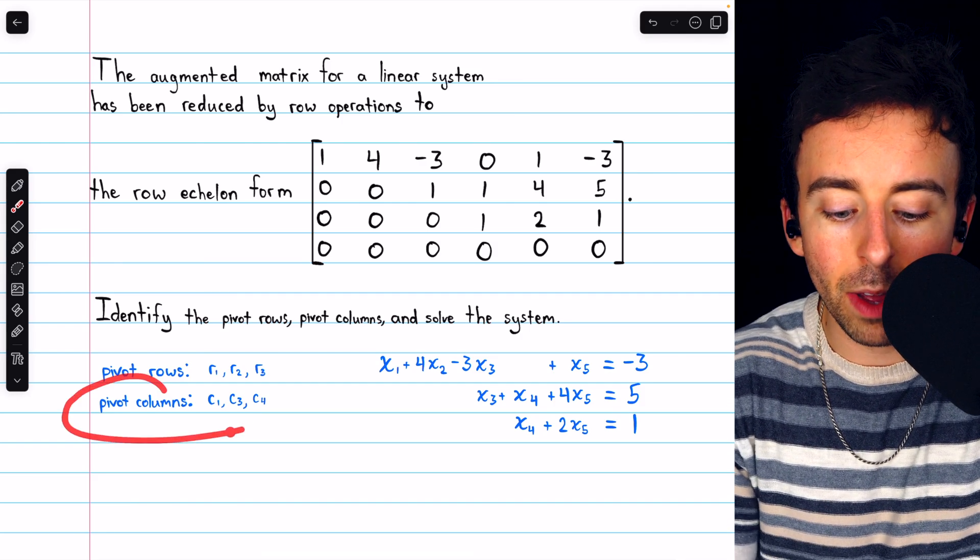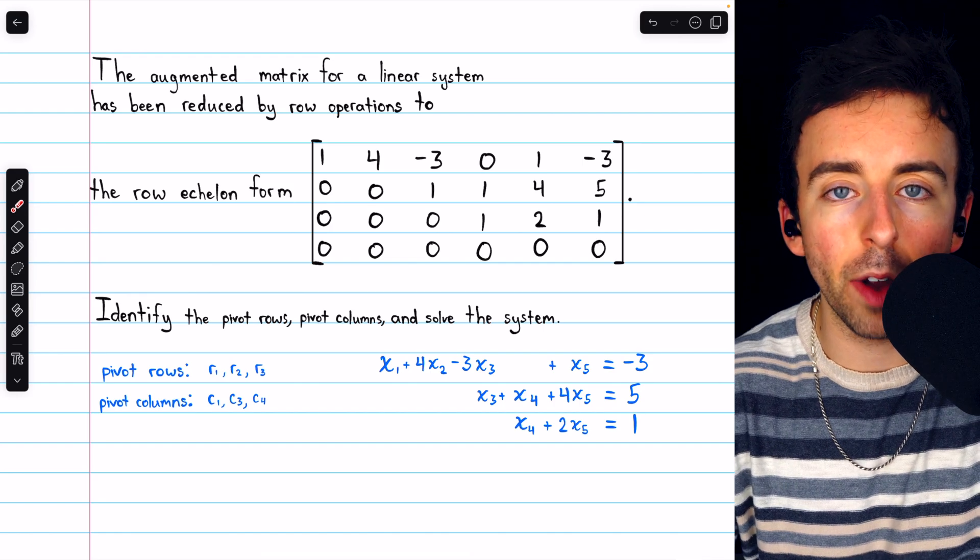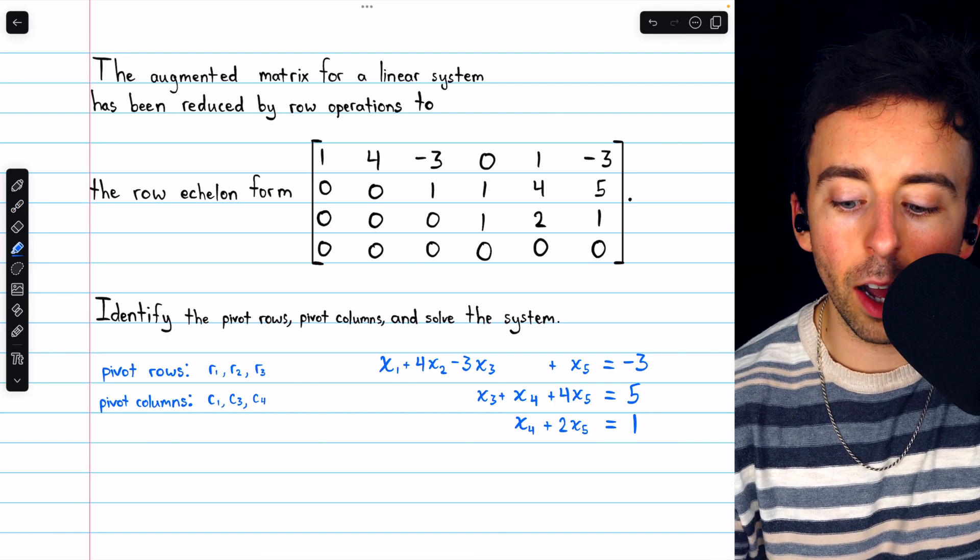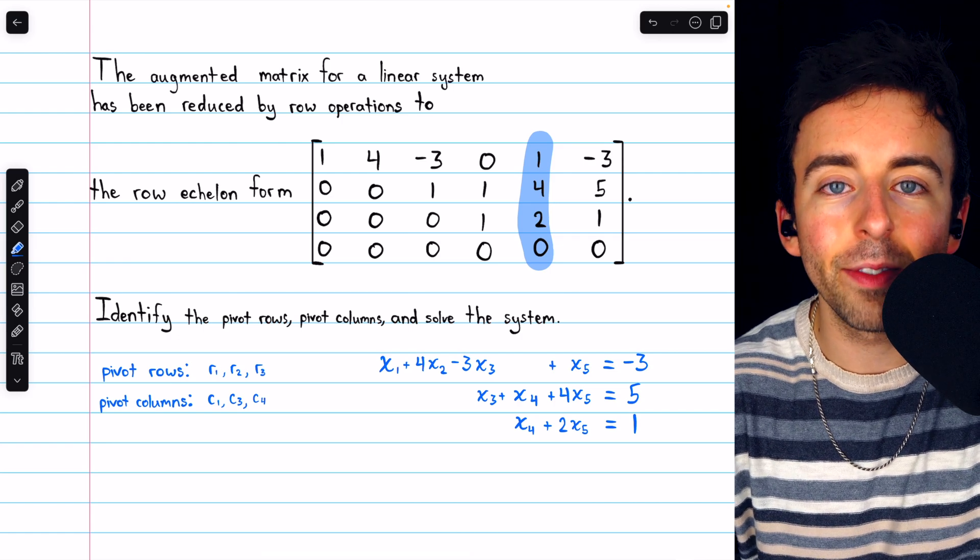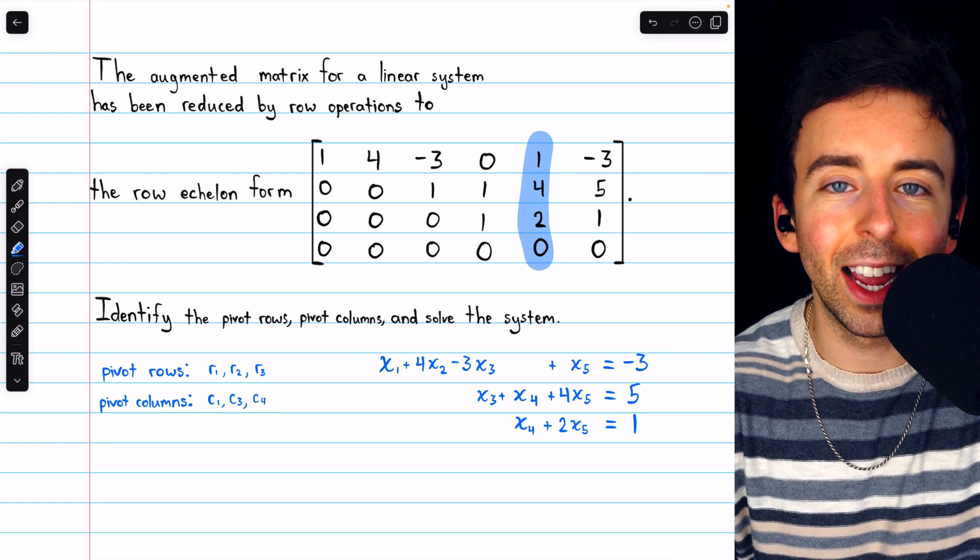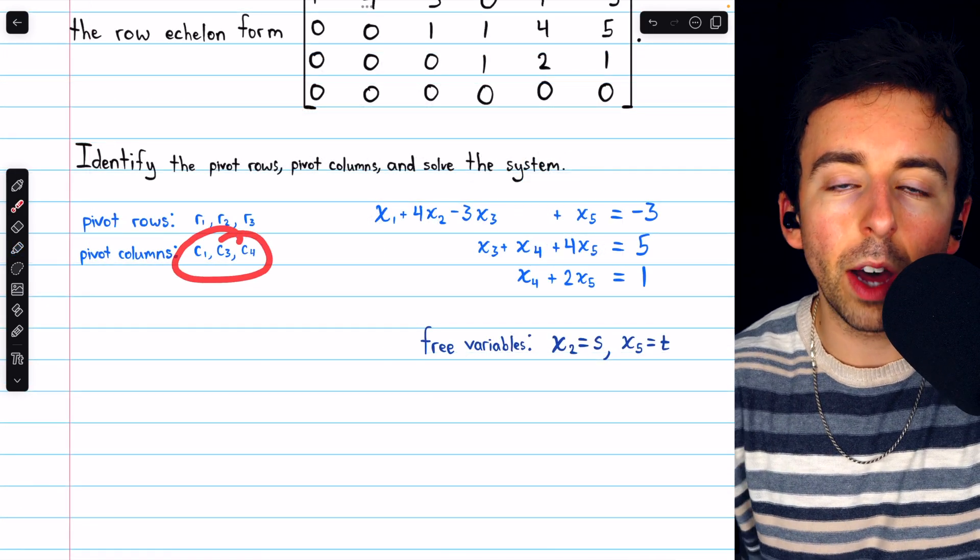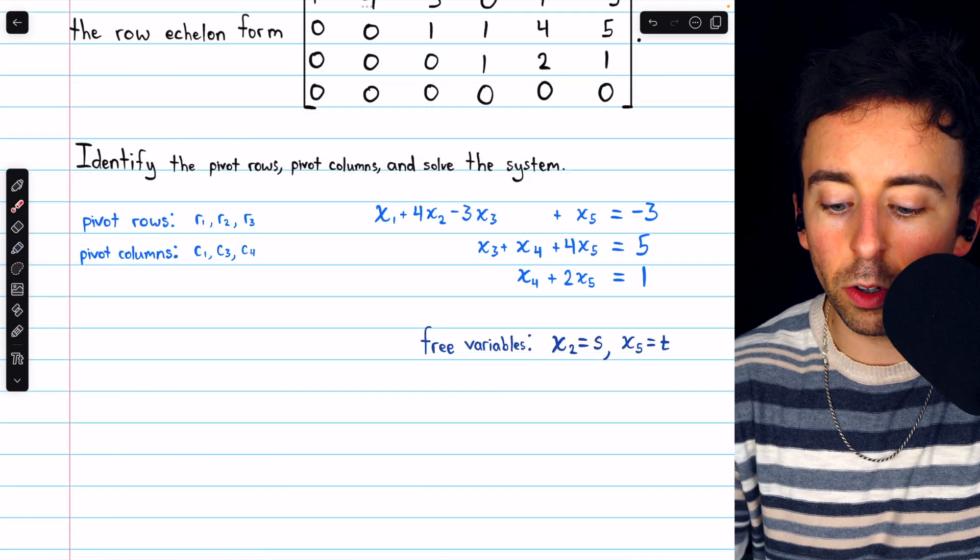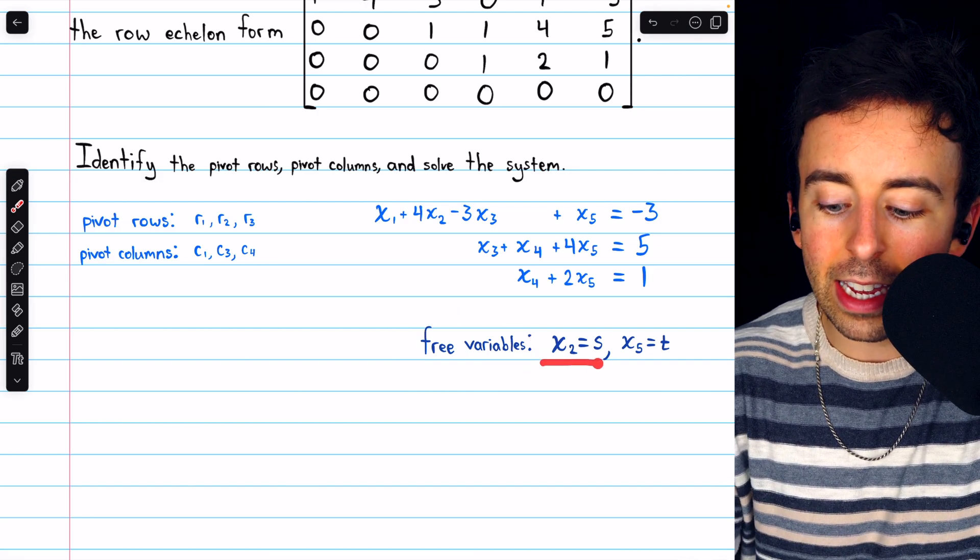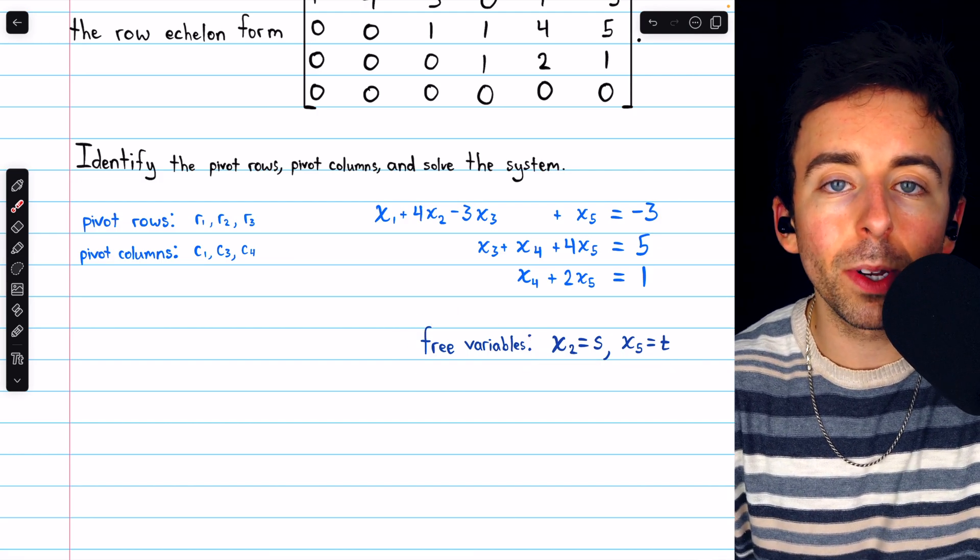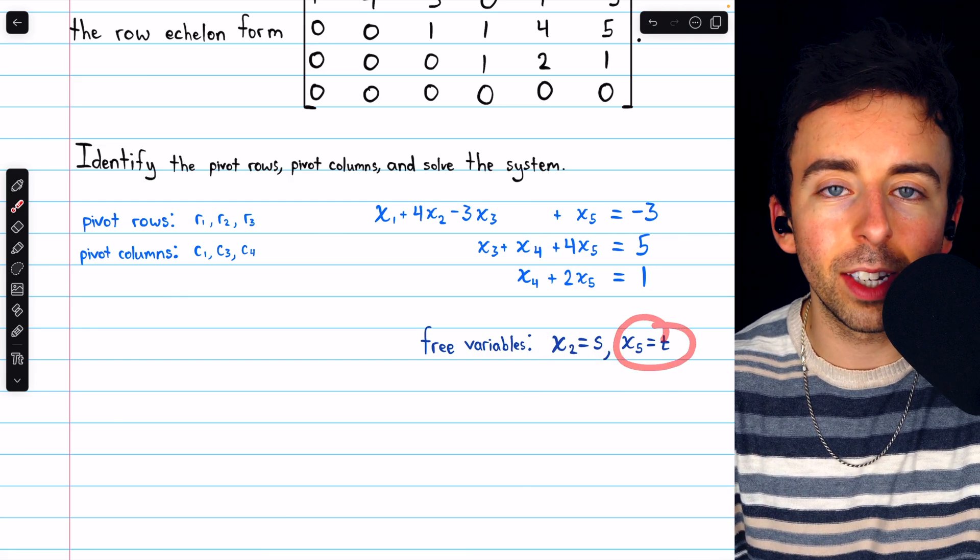But column 2 is not a pivot column. Hence, x2 must be a free variable. We could say the same thing about column 5 and its corresponding variable x5. It is a free variable. Its column does not contain a leading one. It's not a pivot column. Since columns 2 and 5 are not pivot columns, and so their corresponding variables are free variables, we can set each of them equal to an arbitrary parameter. So let's say x2 equals s and x5 equals t.